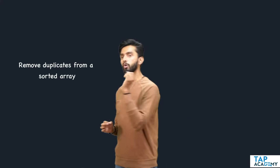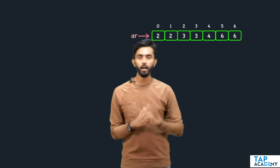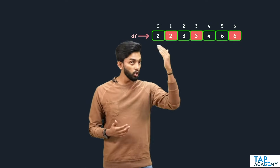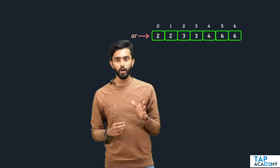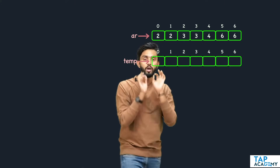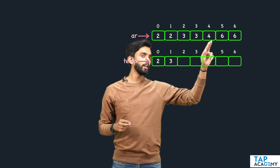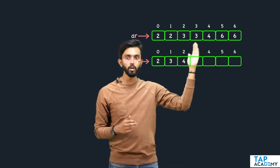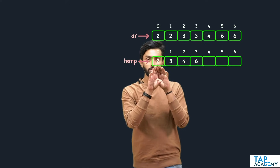Namaste and welcome back to the class. We were discussing different kinds of operations on arrays. Let me introduce another operation you'll frequently use: removing duplicates from a sorted array. Assume we have an array — you can notice duplicates are present and it is sorted. After removing duplicates, for example, from [2,2,3,3,4,6,6], it becomes [2,3,4,6].